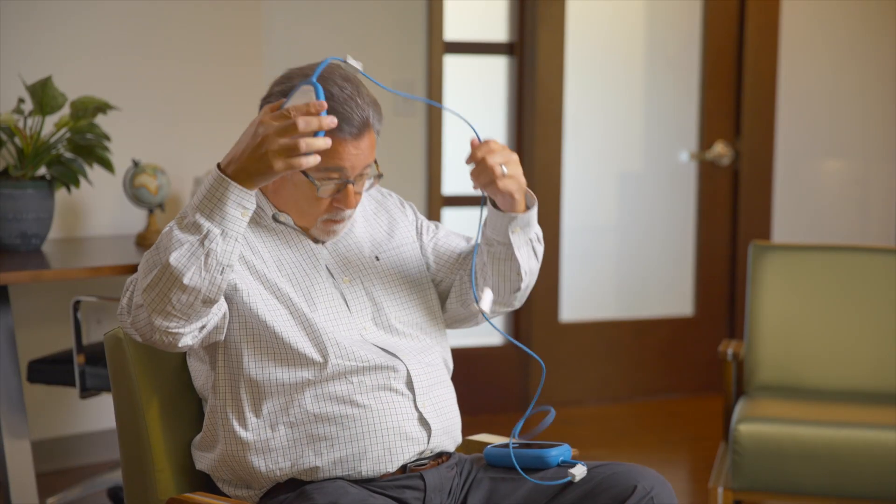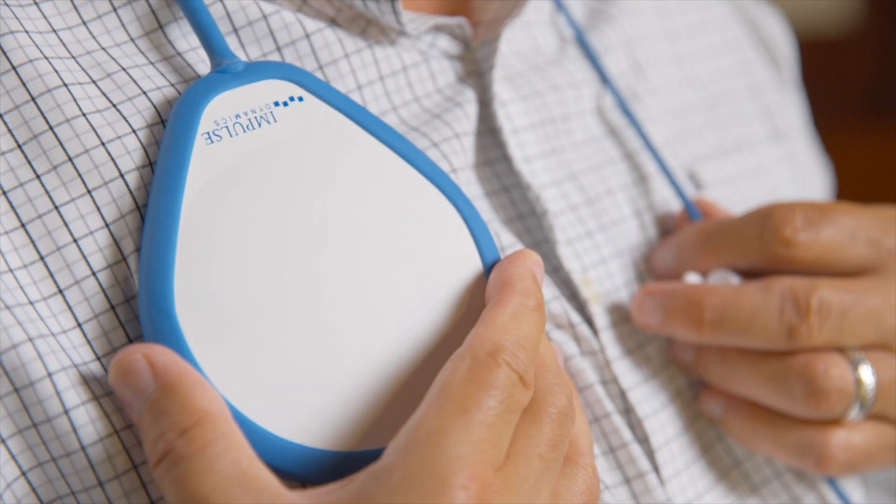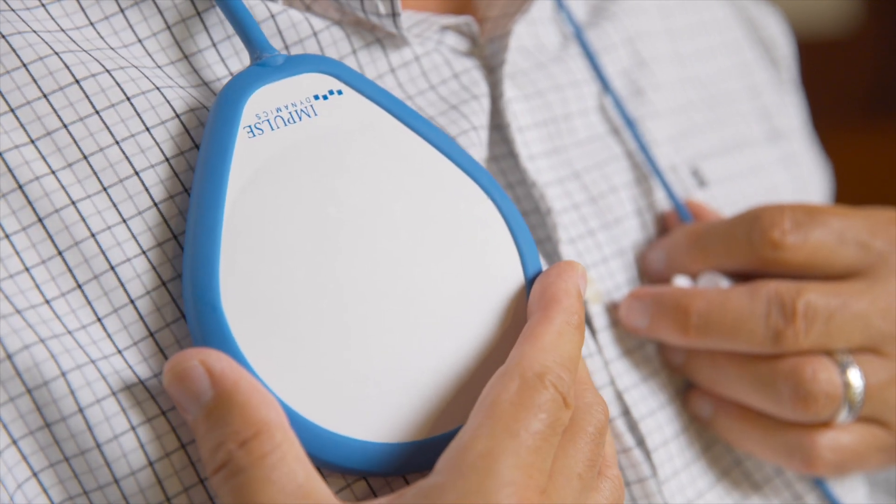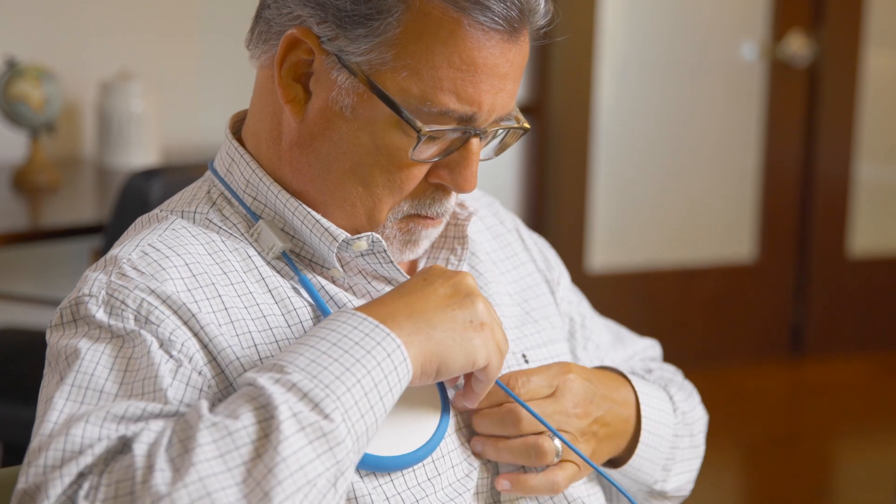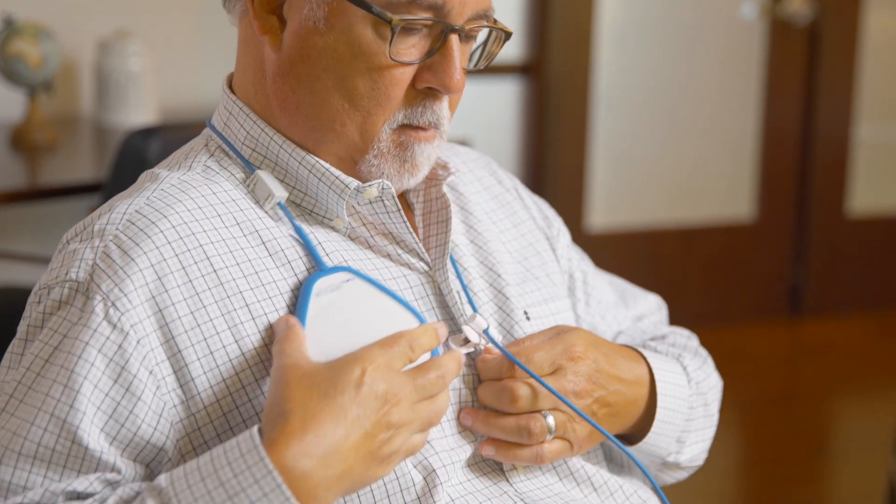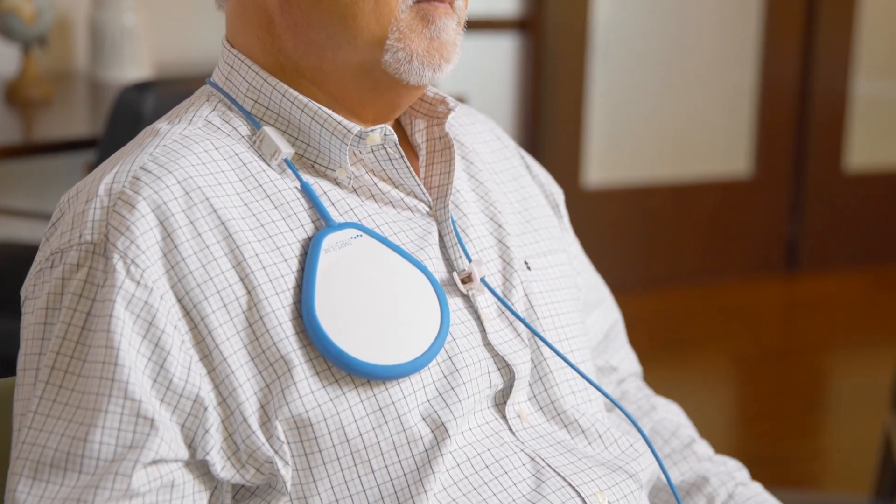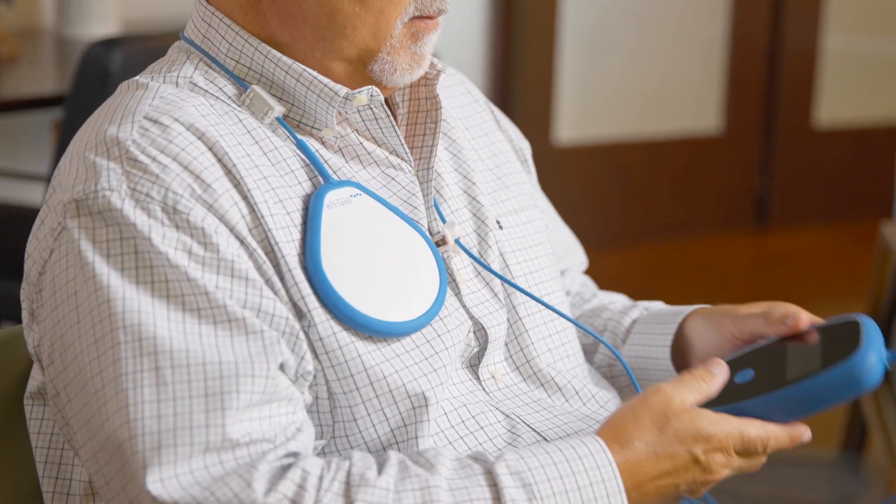While draping the blue cord around the back of your neck, position the blue and white paddle over your Optimizer with the Impulse Dynamics logo facing out. Attach the white clip to your shirt to secure the paddle in place. The charging process will work over normal layers of clothing. You are now ready to start charging your Optimizer.